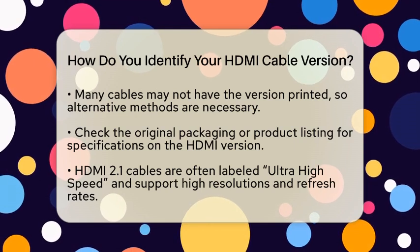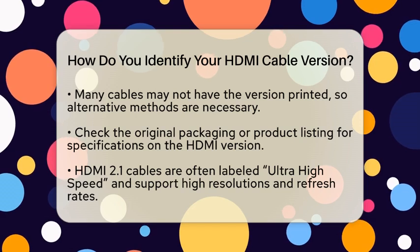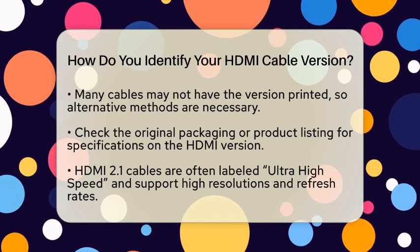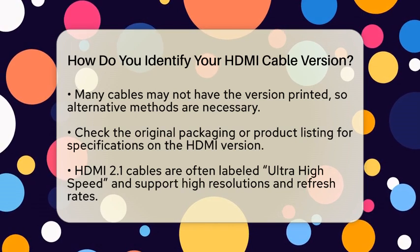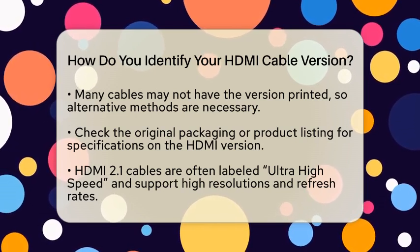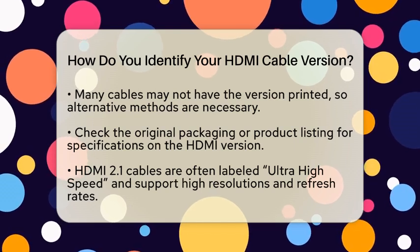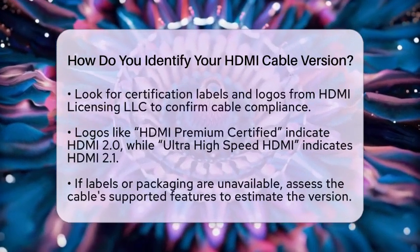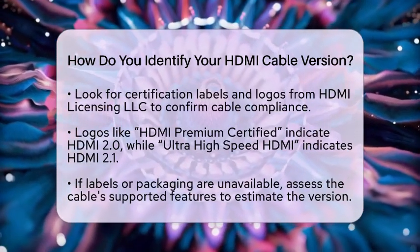For instance, HDMI 2.1 cables are usually labeled as ultra-high speed and can support 8K at 60 Hz or 4K at 120 Hz, with a bandwidth of up to 48 gigabits per second. Another reliable way to identify your cable is by checking for certification labels and logos. HDMI Licensing LLC provides official certification logos for compliant cables. Look for logos such as HDMI Premium Certified for HDMI 2.0, or Ultra High Speed HDMI for HDMI 2.1.